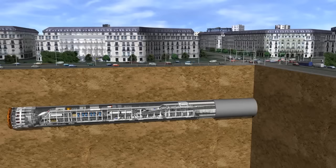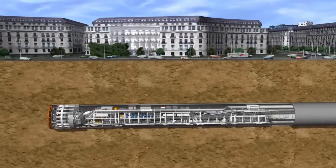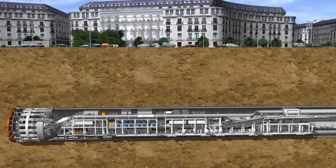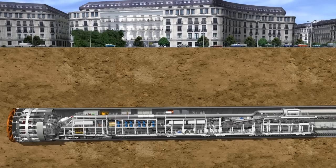Traditionally, earth pressure balance shields made by Herrenknecht are in their element in cohesive soils consisting of clay and silt with low-water permeability. Moreover, loose soils consisting of sand and gravel and unstable rock can also be successfully mastered with the EPB technology.